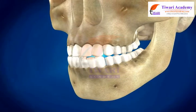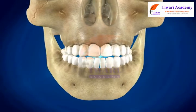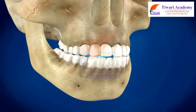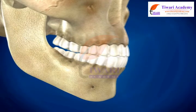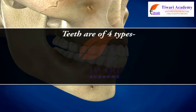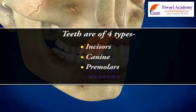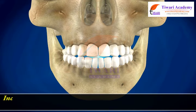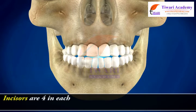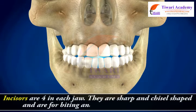Teeth are present in both jaws of human beings and are embedded in the sockets of the jaw bones. In an adult man there are 32 teeth, 16 in each jaw. Teeth are of four types: incisors, canines, premolars, and molars. Incisors are four in each jaw; they are sharp and chisel-shaped and are used for biting and cutting.